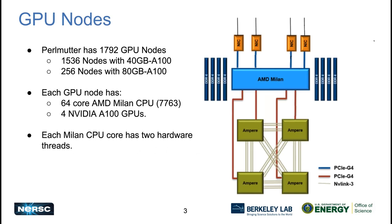The GPU nodes on Perlmutter — we have about 1792 GPU nodes and all of them have the same architecture except a small change. Out of these 1792 nodes, 1536 nodes have A100 GPUs in the 40 GB variant, meaning the HBM size is 40 GB on each GPU, while 256 of these nodes have the 80 GB variant.